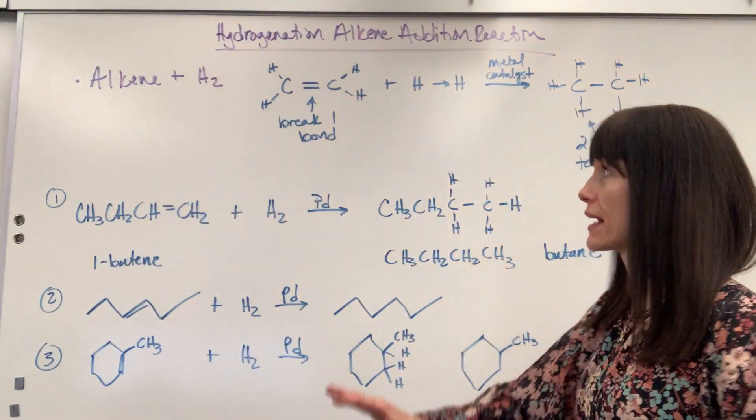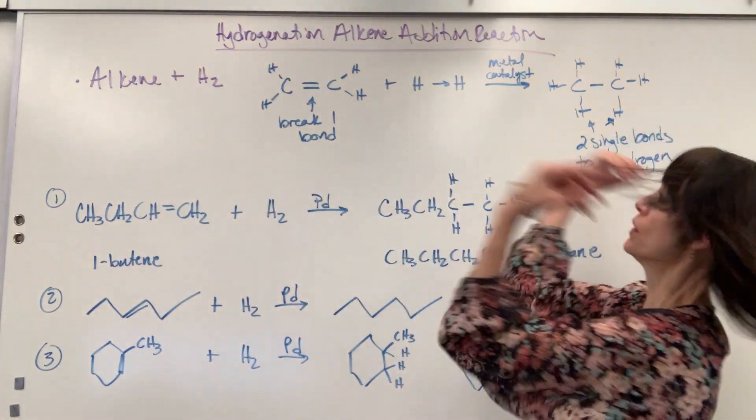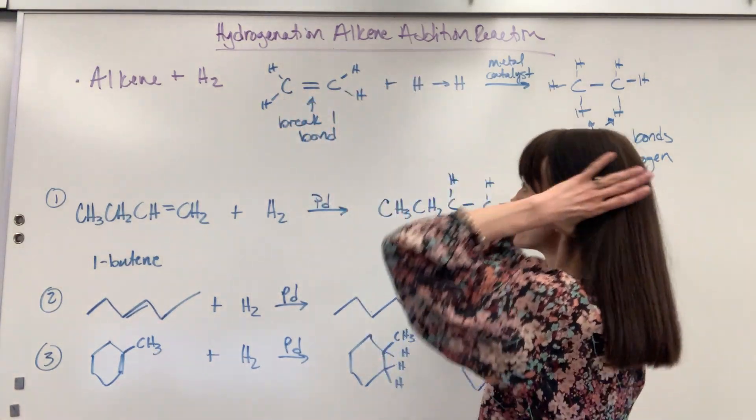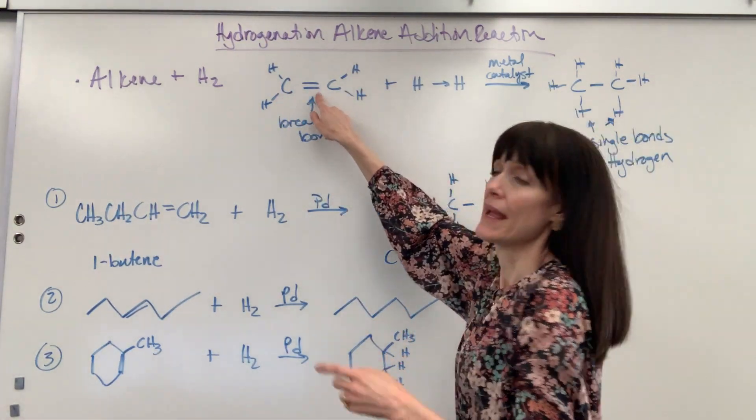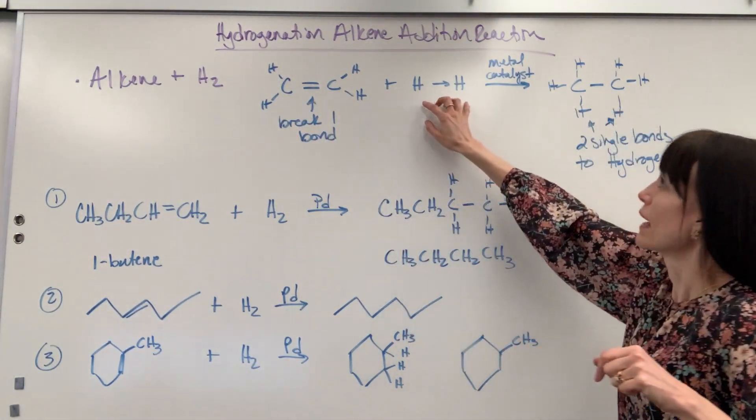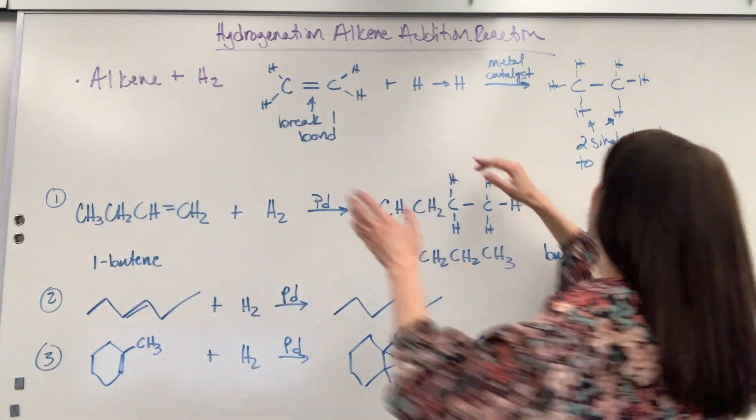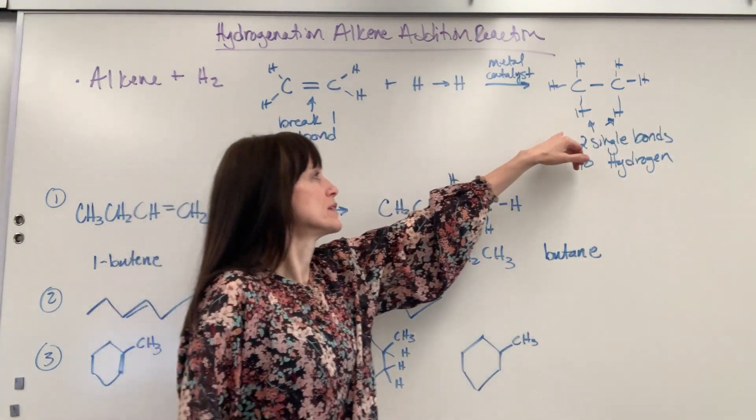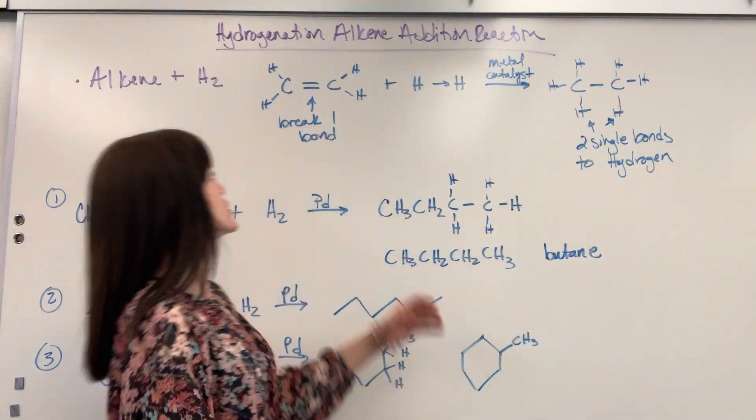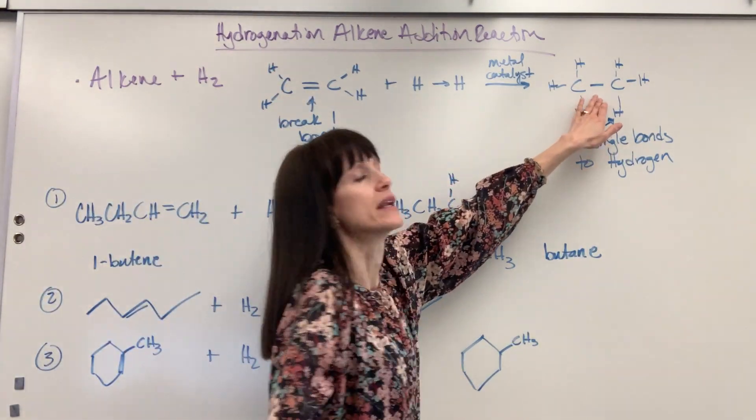So in this addition reaction, let's break it down. You're going to have your alkene, that double bond, and the double bond, we're going to break one bond inside of that. Break one bond in the double bond when we add the hydrogen to it. And then the hydrogen is going to form two single bonds. So you're going from the alkene to the alkane.